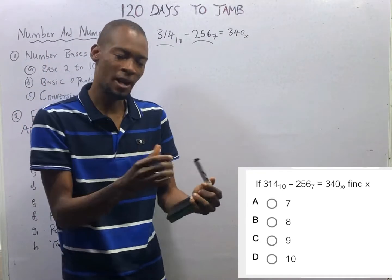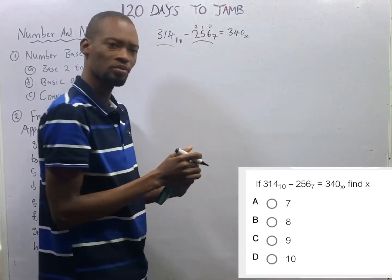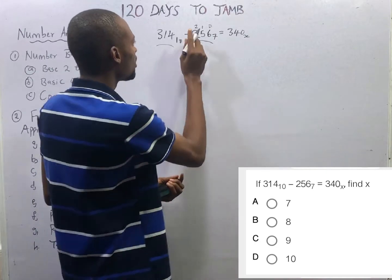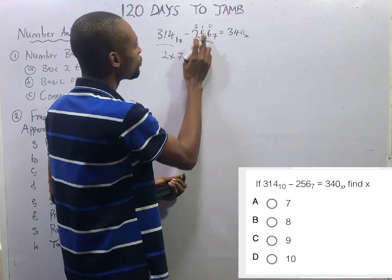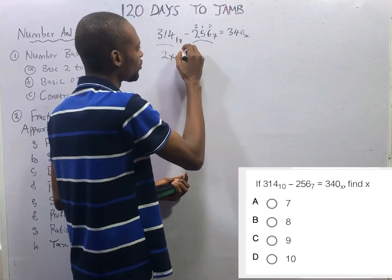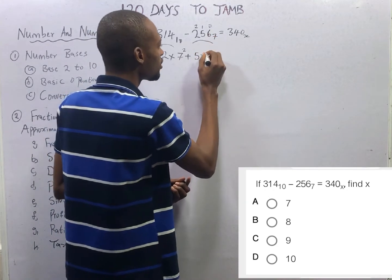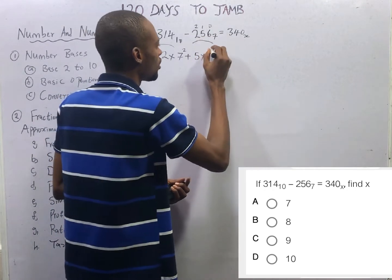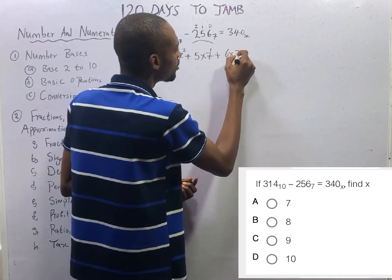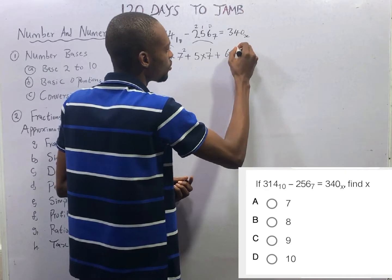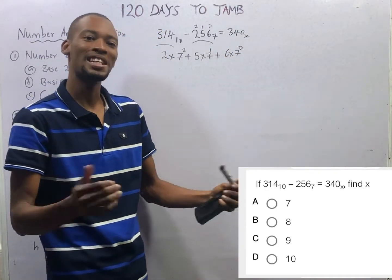Now, how do we convert 256 base 7 to base 10? Like I have taught you so far, you simply say 0, 1, 2. Then, 2 times the base, 2 times 7, raised to the power of 2, plus 5 times the base raised to the power of 1, plus 6 times the base raised to the power of 0. This is converting 2, 5, 6 base 7 to base 10.